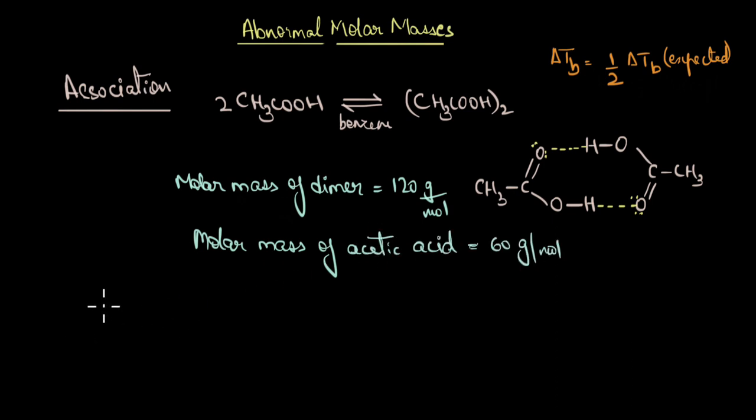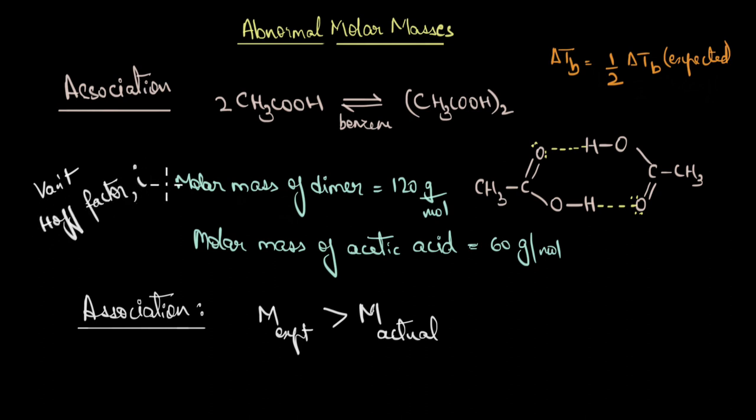In other words, we can say that when we have association of solute particles, the experimentally obtained molar mass value would always be greater than the actual value. And this is what we refer to as the abnormal molar mass. And to account for this abnormality that arises due to association and dissociation of solute molecules, Vanthoff introduced a term known as Vanthoff factor. It is denoted by I.